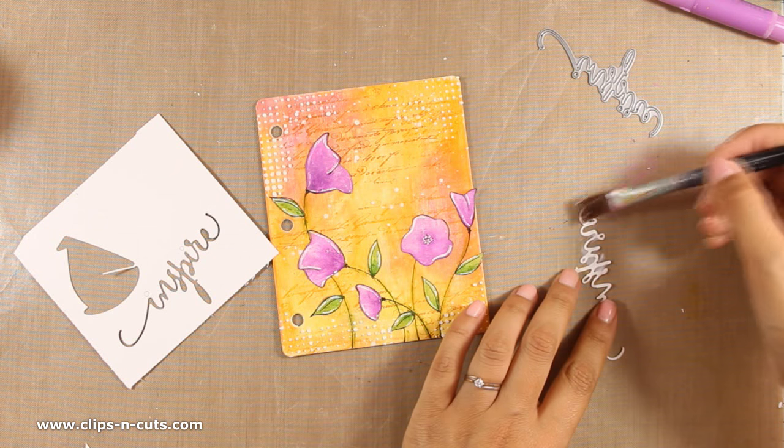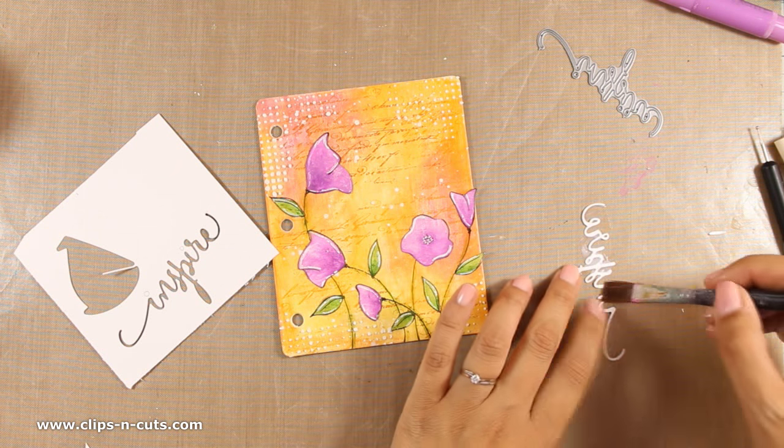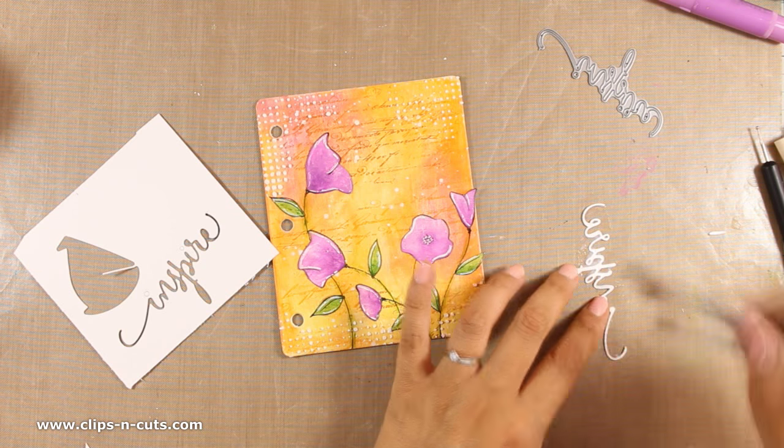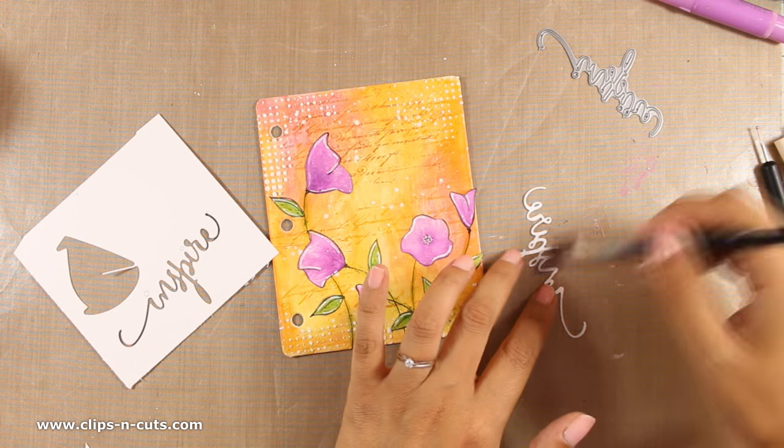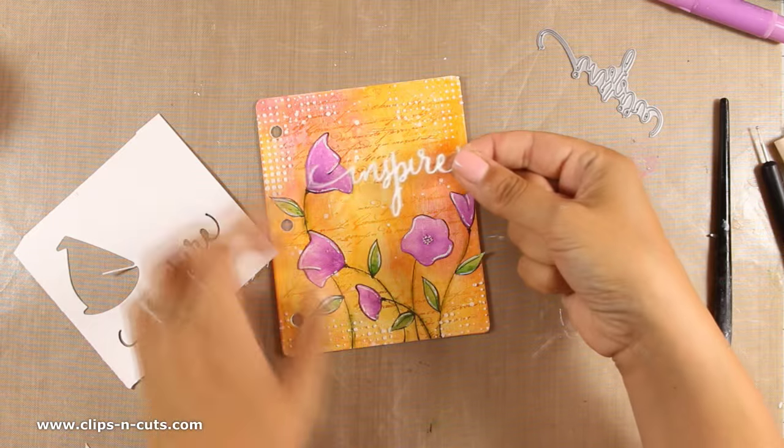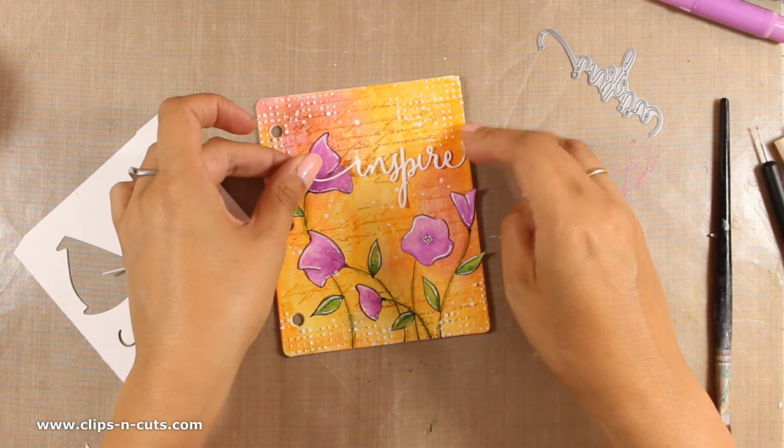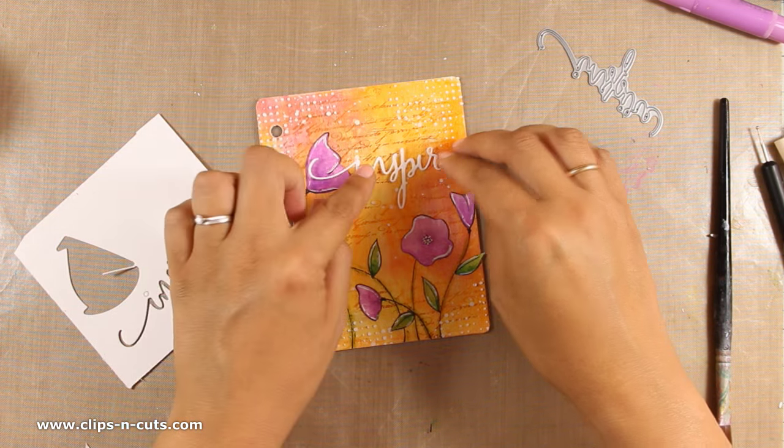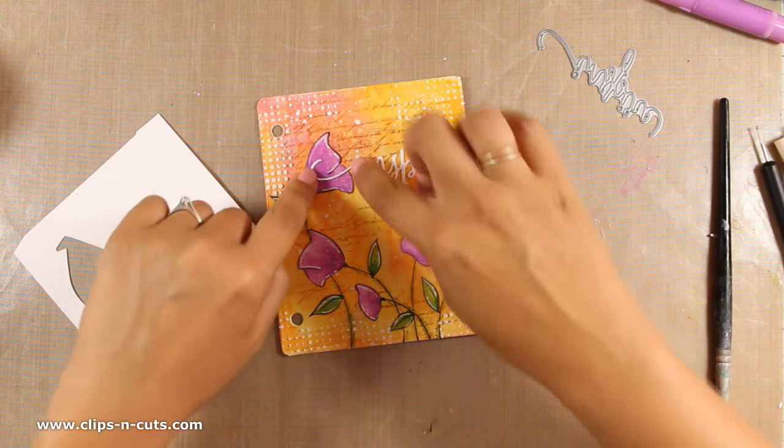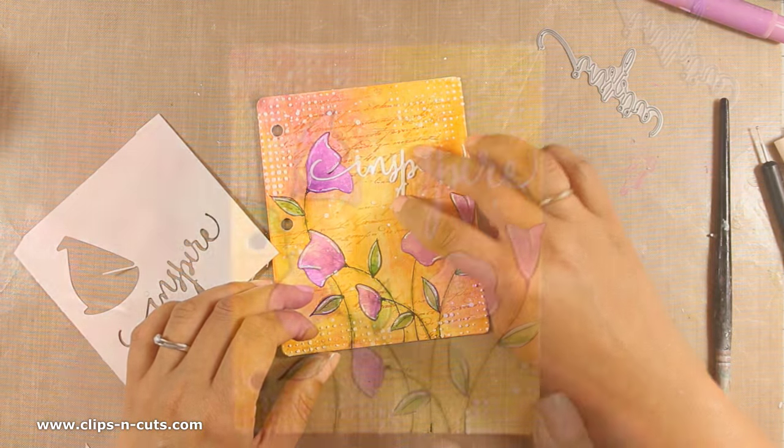At this stage you can always use your stamps to stamp a quote, or you can always use some alpha stickers to write down whatever you like, or even some printouts. There are endless possibilities on how you can journal. You can always use your black marker and write down whatever you like.